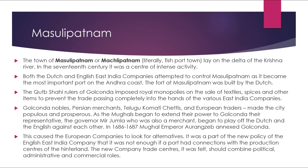Masulipatnam, or Machilipatnam, literally the fish port town, lay on the delta of the Krishna River. In the 17th century it was a centre of intense activity. Both the Dutch and English East India Companies attempted to control Masulipatnam as it became the most important port on the Andhra coast. The fort of Masulipatnam was built by the Dutch. The Qutub Shahi rulers of Golconda imposed royal monopolies on the sales of textiles, spices and other items to prevent trade passing completely into the hands of the East India Companies. Golconda nobles, Persians, merchants, Telugu Komati Chetis and European traders made the city prosperous. As the Mughals extended their power to Golconda, the governor Mir Jumla — who was himself a merchant — began to play the Dutch and English against each other. In 1686–87, Mughal Emperor Aurangzeb annexed Golconda, causing European companies to look for alternatives. It was part of the new policy of the English East India Company that trade centres should combine political, administrative and commercial roles.